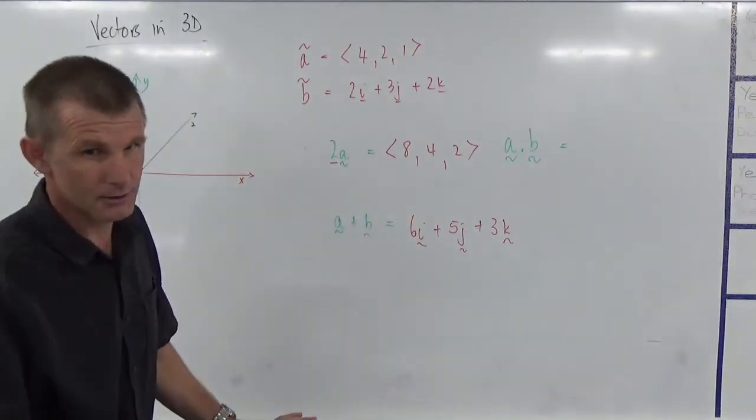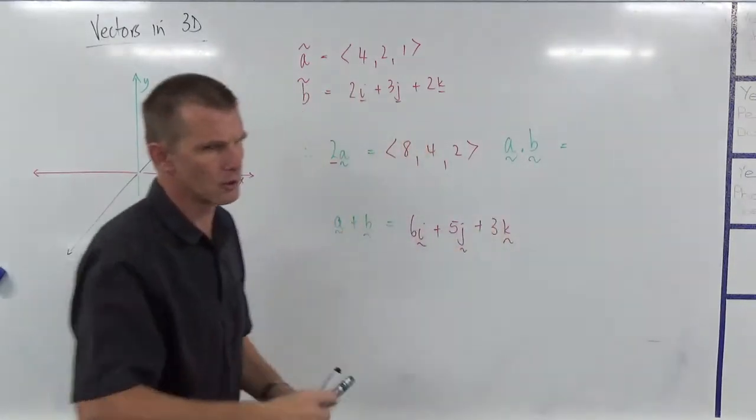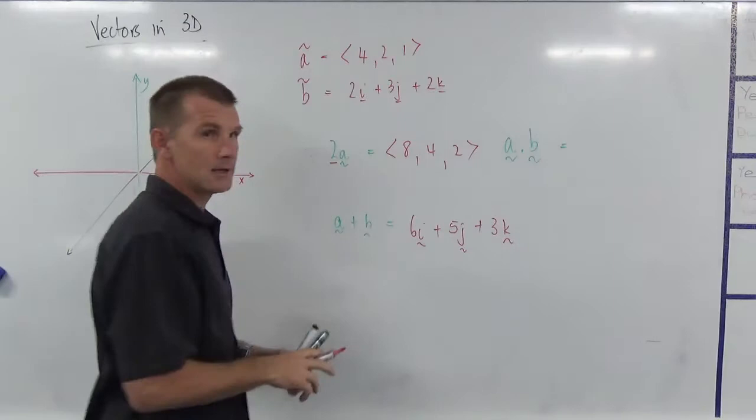Again, very similar to two-dimensional vectors. You just wouldn't have had that one there. So I'm sure you're probably picking this up pretty quick. Let's do a dot b.